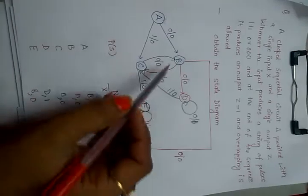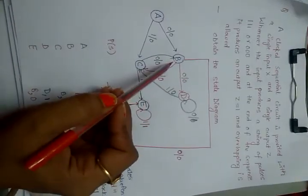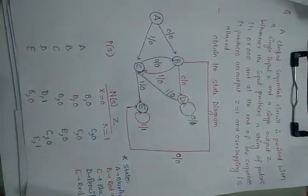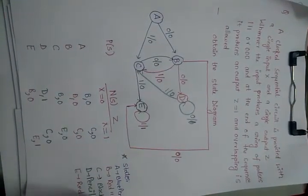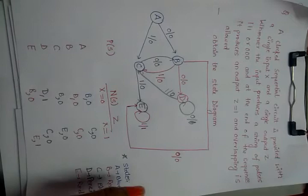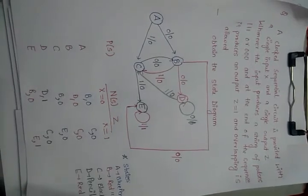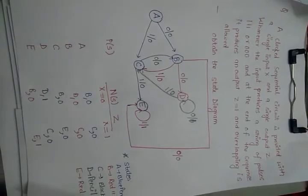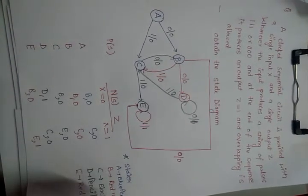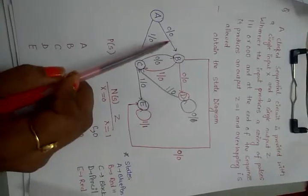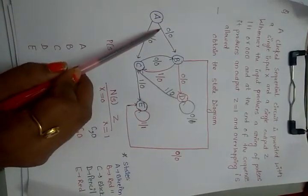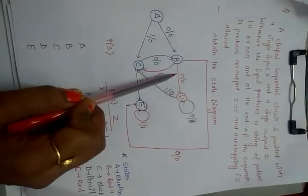At state B, it also has two options: either 0 or 1. If the input is 0, the sequence so far is 00, continuing the 000 pattern.